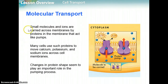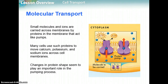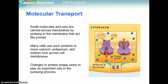So for molecular transport, small molecules and ions are carried across membranes by proteins in the membrane that act like pumps. Ions are charged — like sodium and potassium, which are positively charged ions. If they were trying to get through the membrane, these tails are nonpolar, so they would not interact with the polar molecules or the ions. So we need some sort of protein to help that happen.